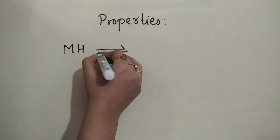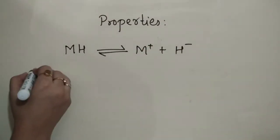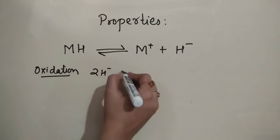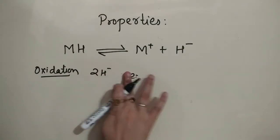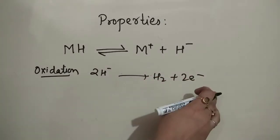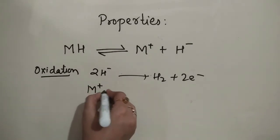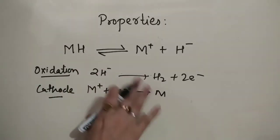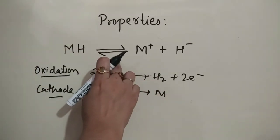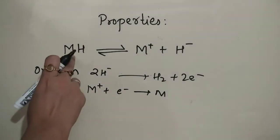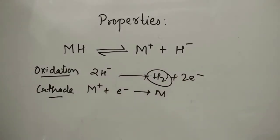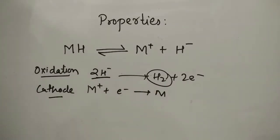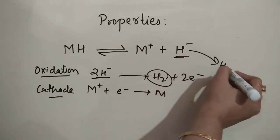Whenever ionic hydrides are subjected to electrolysis, oxidation takes place at the anode, meaning hydrogen gas is released there: 2H⁻ → H2 + 2e⁻. Oxidation takes place at hydrogen and reduction at the metal. This confirms the existence of hydrogen in the form of the hydride ion, since it is the hydride ion that produces the hydrogen gas.